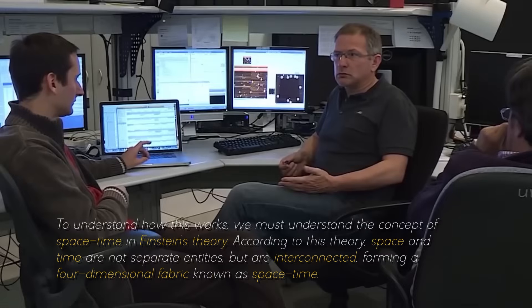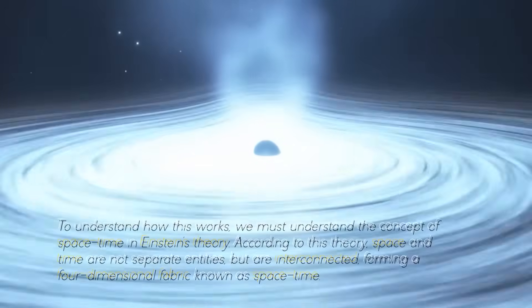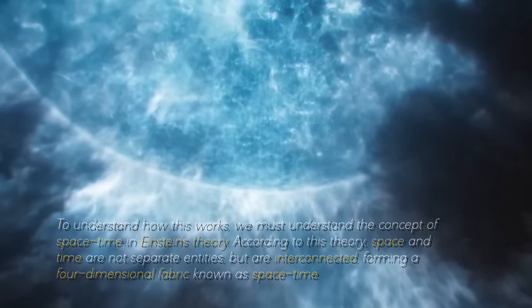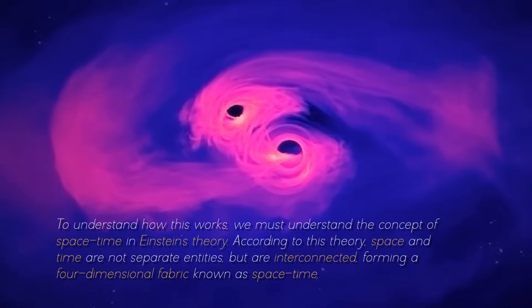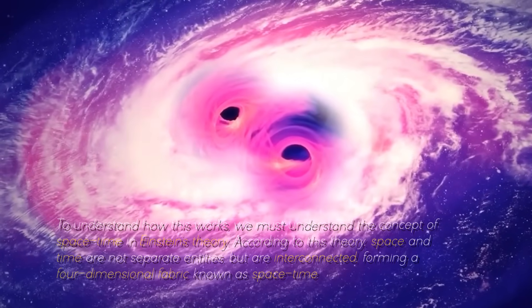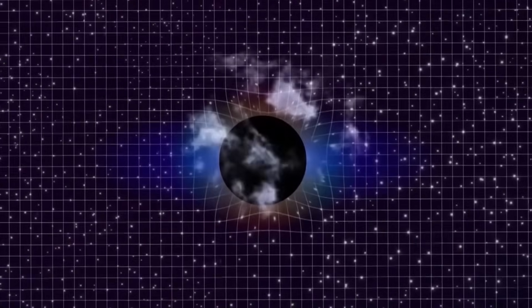To understand how this works, we must understand the concept of space-time in Einstein's theory. According to this theory, space and time are not separate entities, but are connected, forming a four-dimensional fabric known as space-time. Objects with mass warp space-time, creating a gravitational field that affects the motion of other objects.